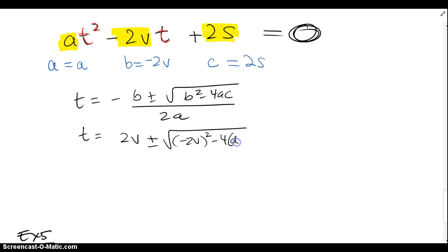b squared, so that's negative 2v squared, minus 4, a is a anyway, and c is 2s, all over 2a, a is a anyway.